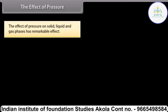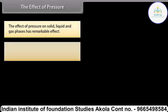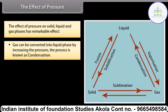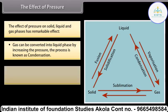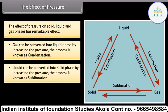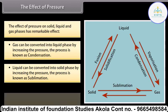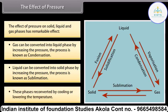The effect of pressure on solid, liquid and gas phases has a remarkable effect. Gas can be converted into liquid phase by increasing the pressure; the process is known as condensation. Liquid can be converted into solid phase by increasing the pressure; the process is known as sublimation. These phases are reconverted by cooling or lowering the temperature.